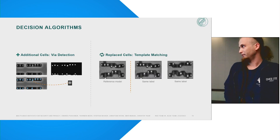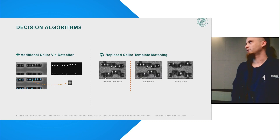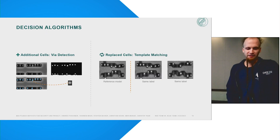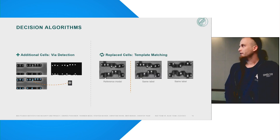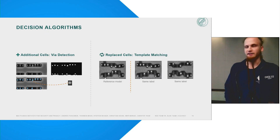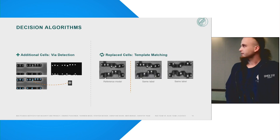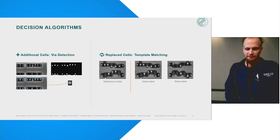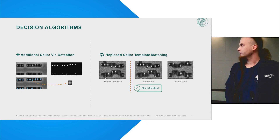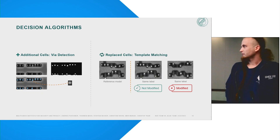If wires can be detected, that means the cell candidate cannot contain nothing. To detect cell replacements, however, this is not sufficient. With template matching, multiple instances of the same cell type can be correlated against a known good sample. In this example, the first cell is considered as the golden reference model. The second cell looks similar to the first, so it won't be detected as a replacement. The third cell looks quite different, so it gets detected as a modification.